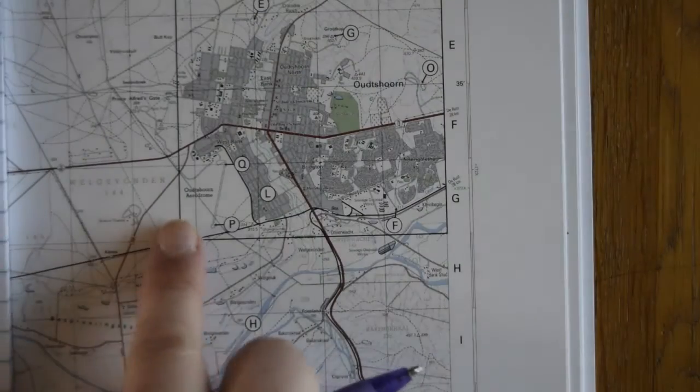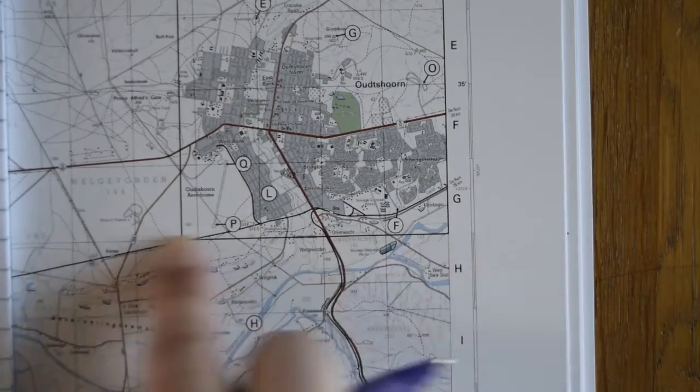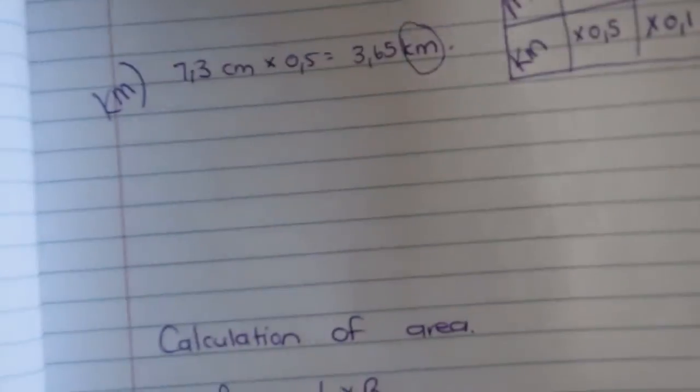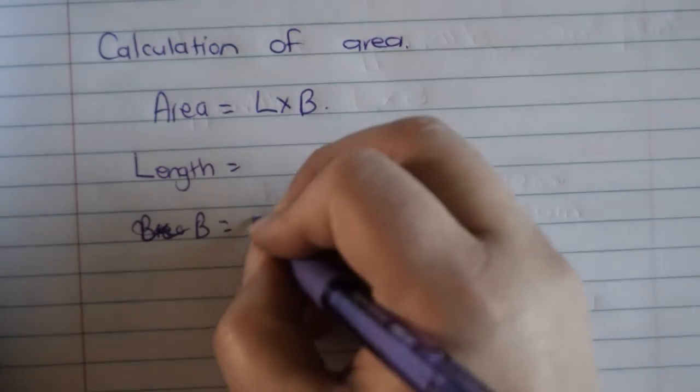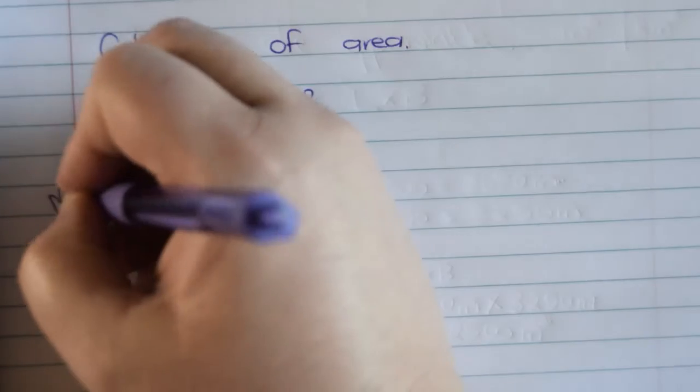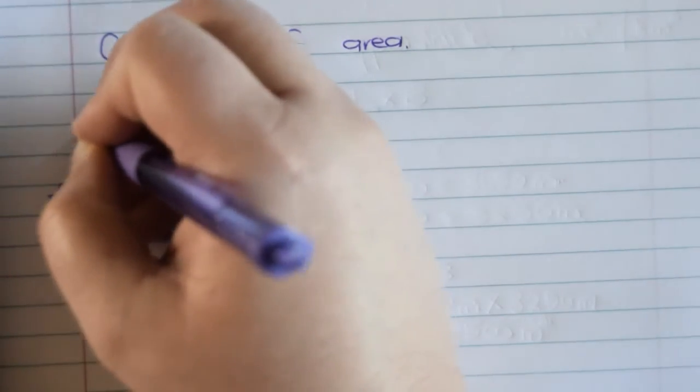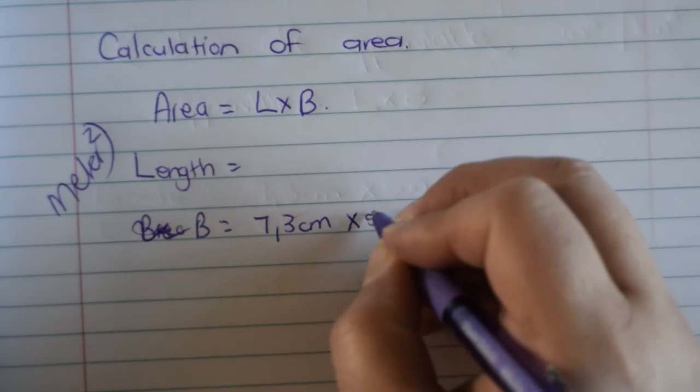Okay. We already did calculate the breadth from that side to that side. So we do have the breadth and I'm just going to write it again. That's when you did and you said 7.3 centimeters. And this one is for meters. I'm going to do it in meters.